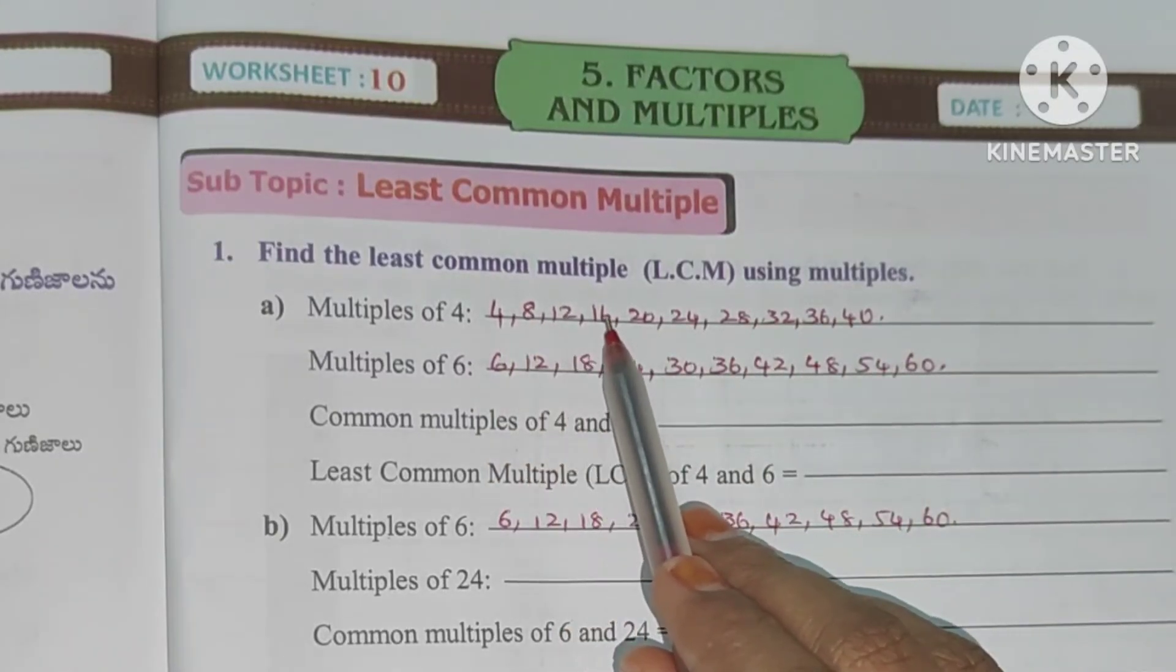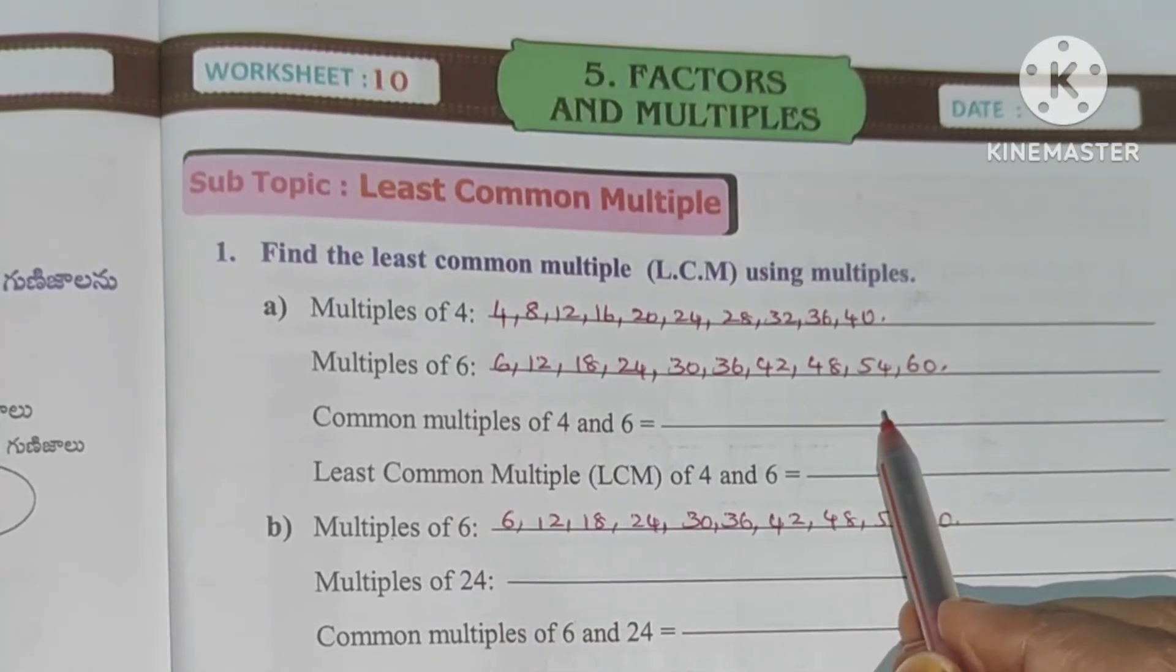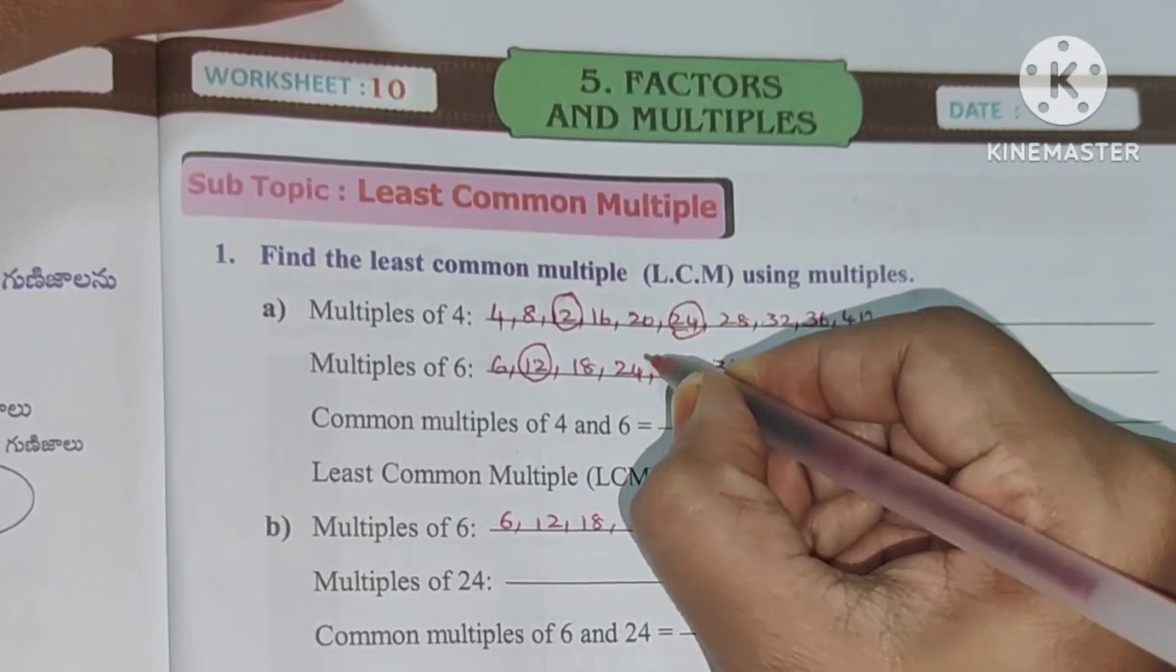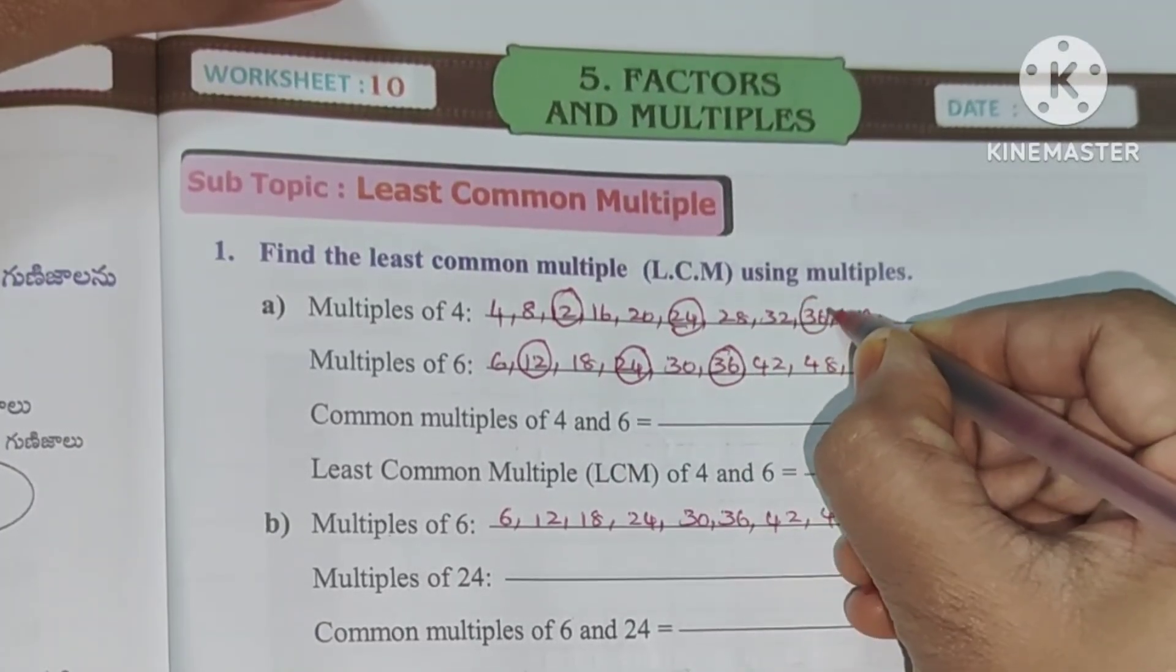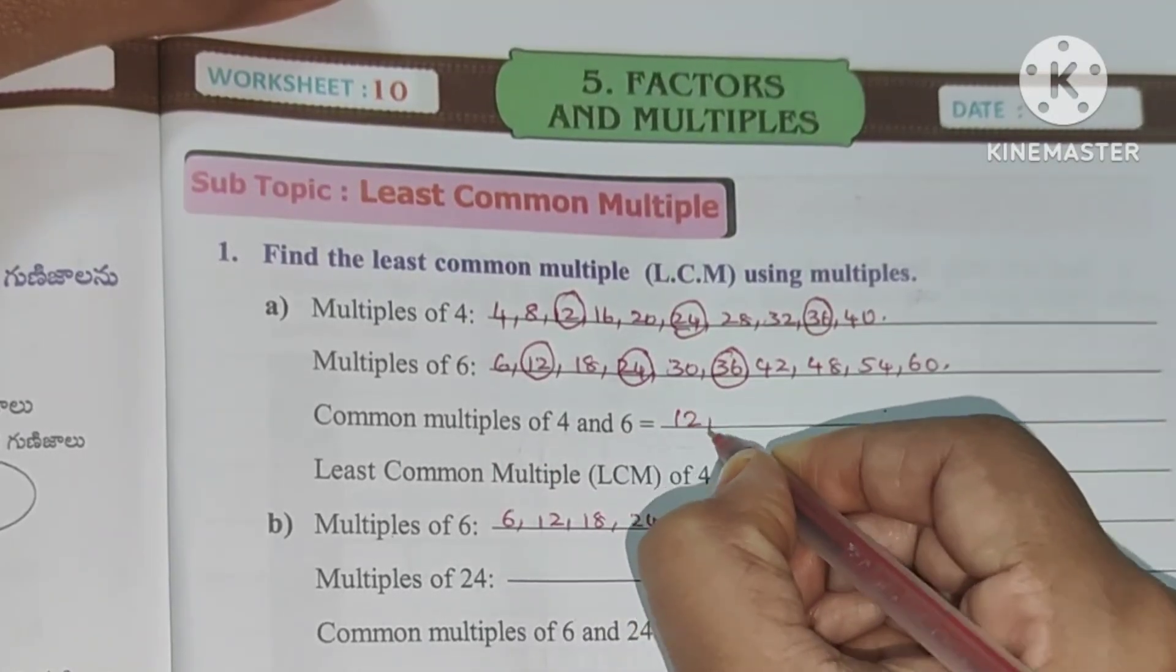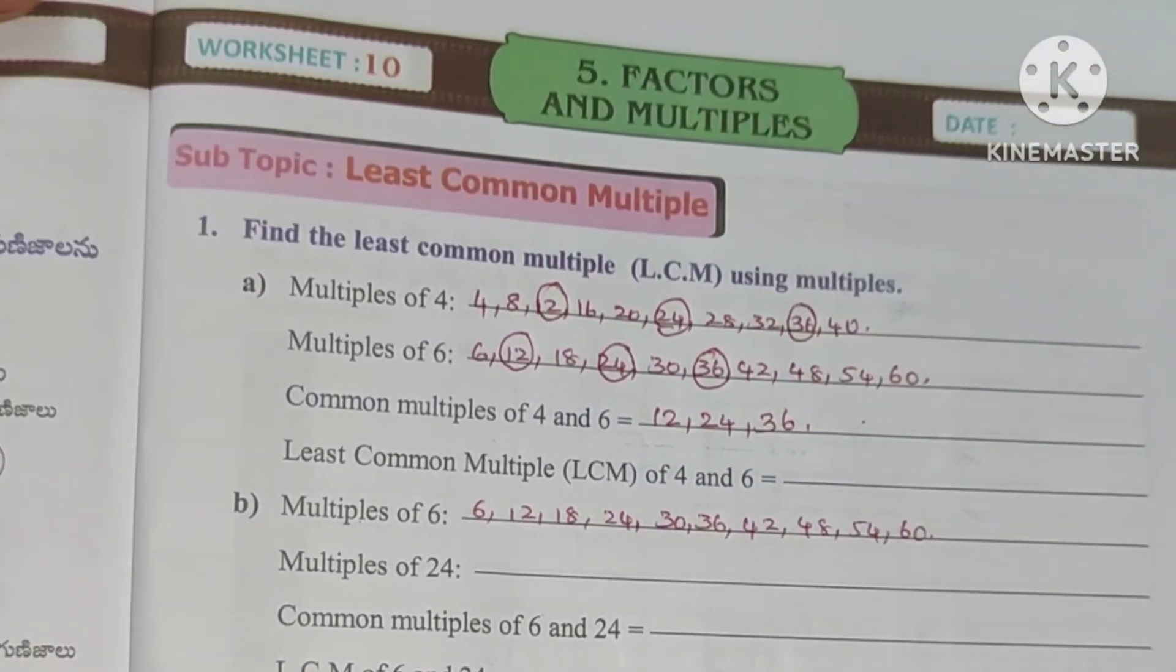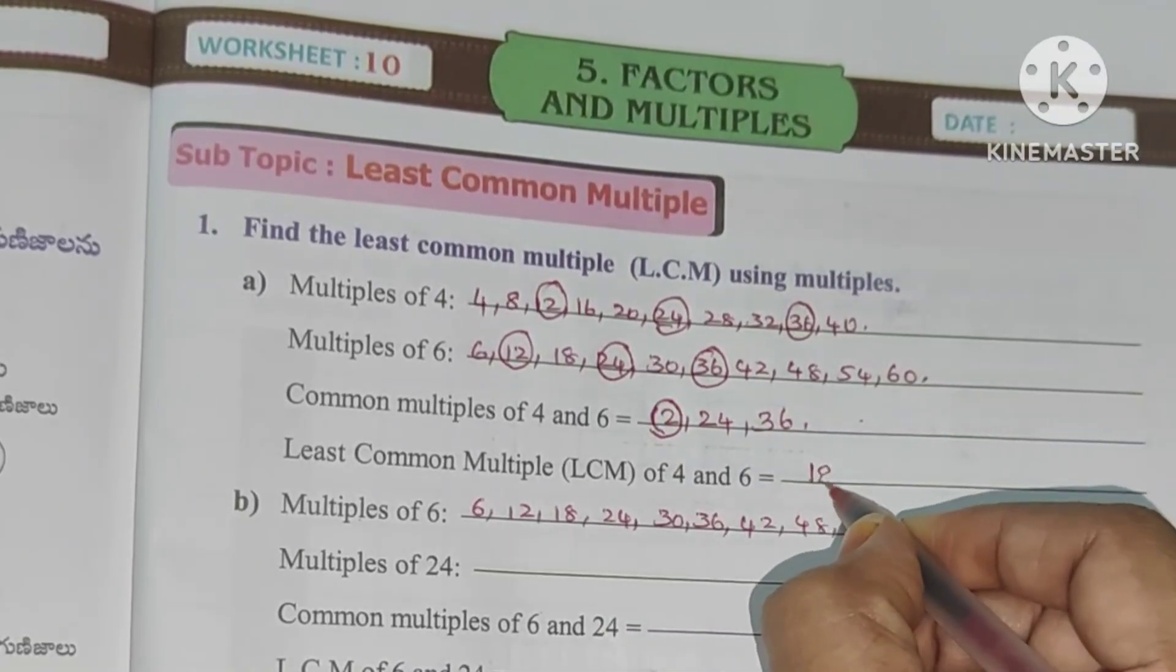4×1=4, 4×2=8, 4×3=12, 4×4=16, 4×5=20, and 4×10=40. And 6 also. Now we will find common. 12 is common, next is 24, next is 36. So common values are 12, 24, 36. The least common is 12.